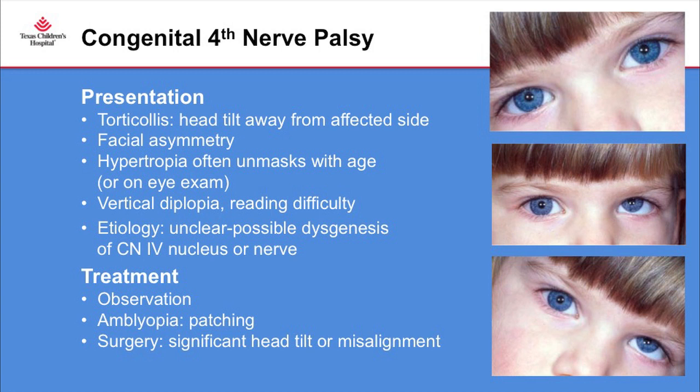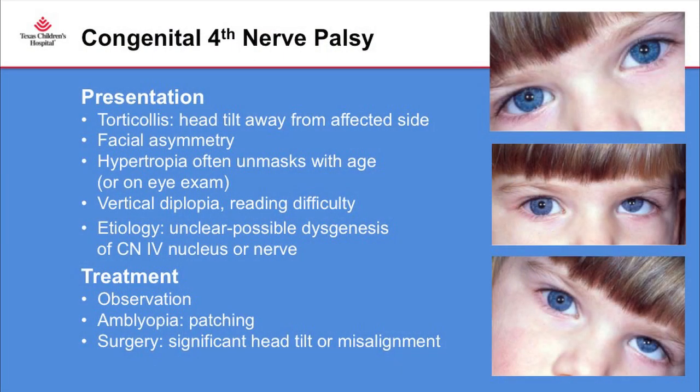Patients with a fourth nerve palsy present with torticollis, with a head tilt away from the affected side — so left hypertropia with a right head tilt. They often have facial asymmetry. Children with congenital fourth nerve palsy often have very good control, so it doesn't unmask sometimes until they get older or on eye exam. As they get older, they may start complaining about vertical diplopia or reading difficulties. Vertical diplopia is always a tip for me to look for a fourth nerve palsy.